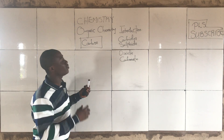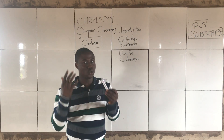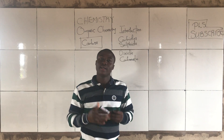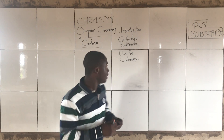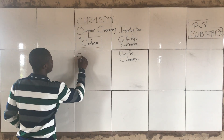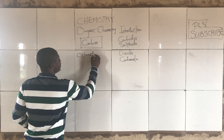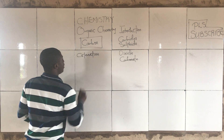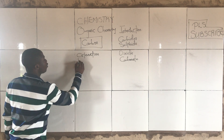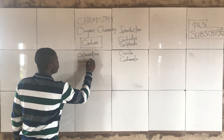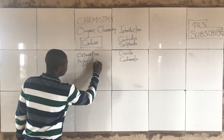Now, carbon as an element has different unique properties. The first unique property of carbon is what we call catenation, and another unique property of carbon is what we call hybridization.